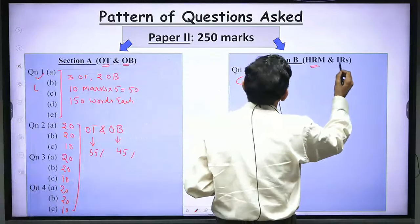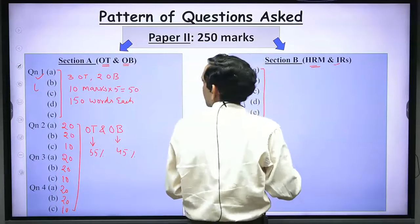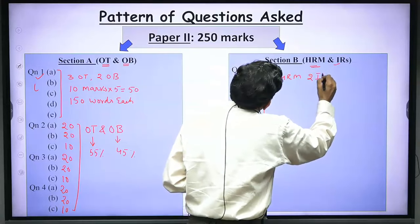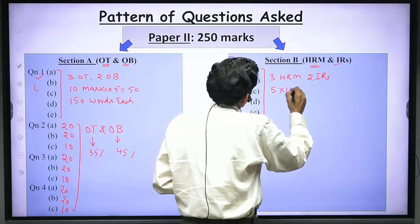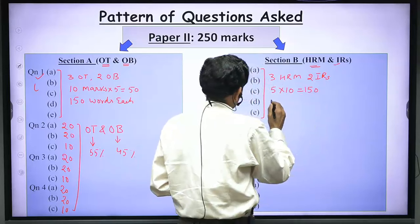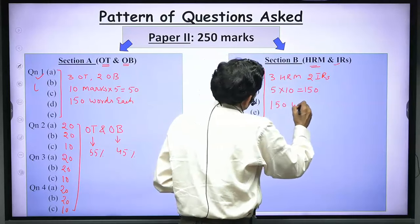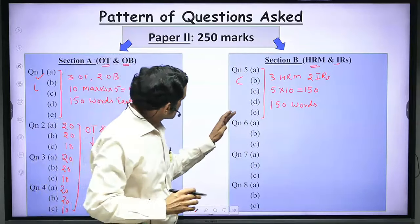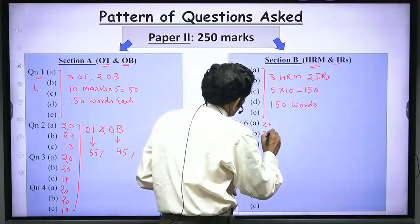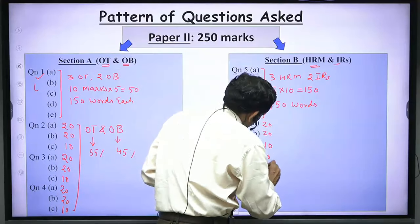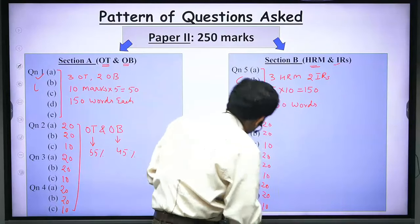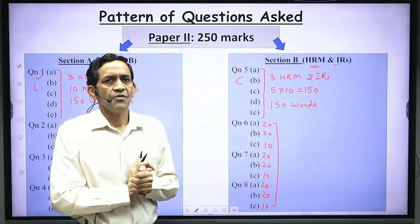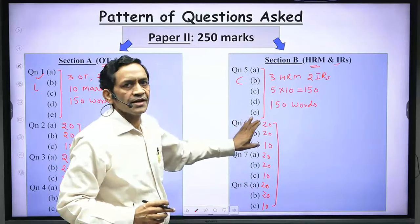In Section B of Paper 2 — HRM and Industrial Relations — questions are asked from both areas: around three short notes from HRM and two short notes from IR. You have to attempt five short notes at 10 marks each — 50 marks — and every short note should be written in around 150 words. This is compulsory. Questions 6, 7, and 8 carry 20-20-10 marks, with the same pattern throughout.